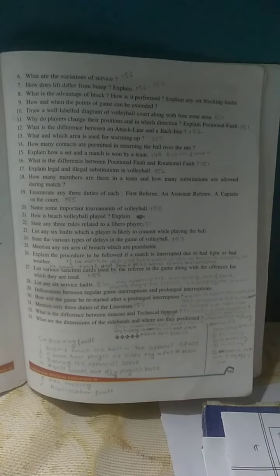Explain any six blocking faults. The six blocking faults are: number one, blocker touch the ball in the opponent space. Two, a back row player or Libro try to put the block. Three, blocking the opponent serve. Four, a ball lands out of a player's block, net touching and penetration fault. These are the blocking faults.